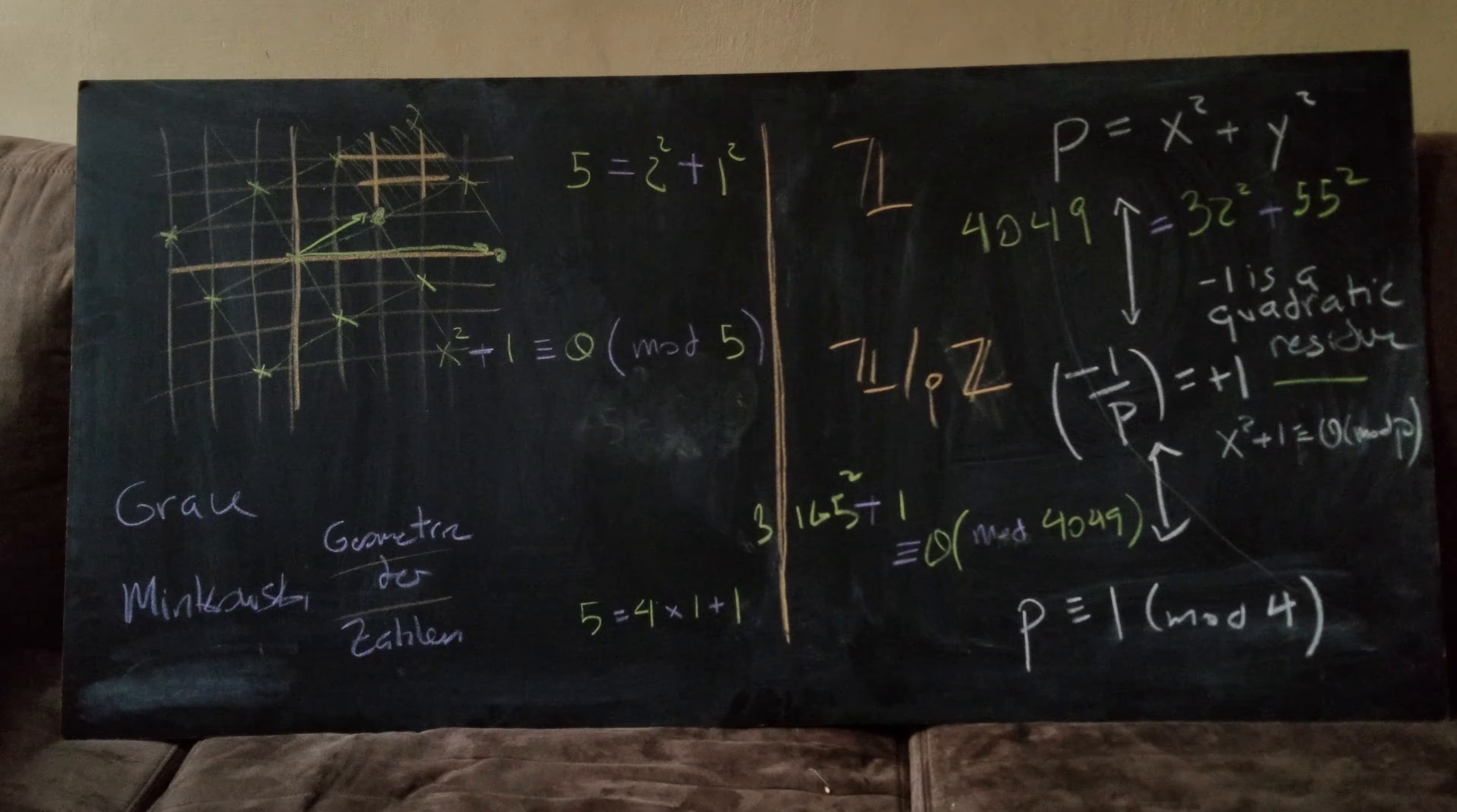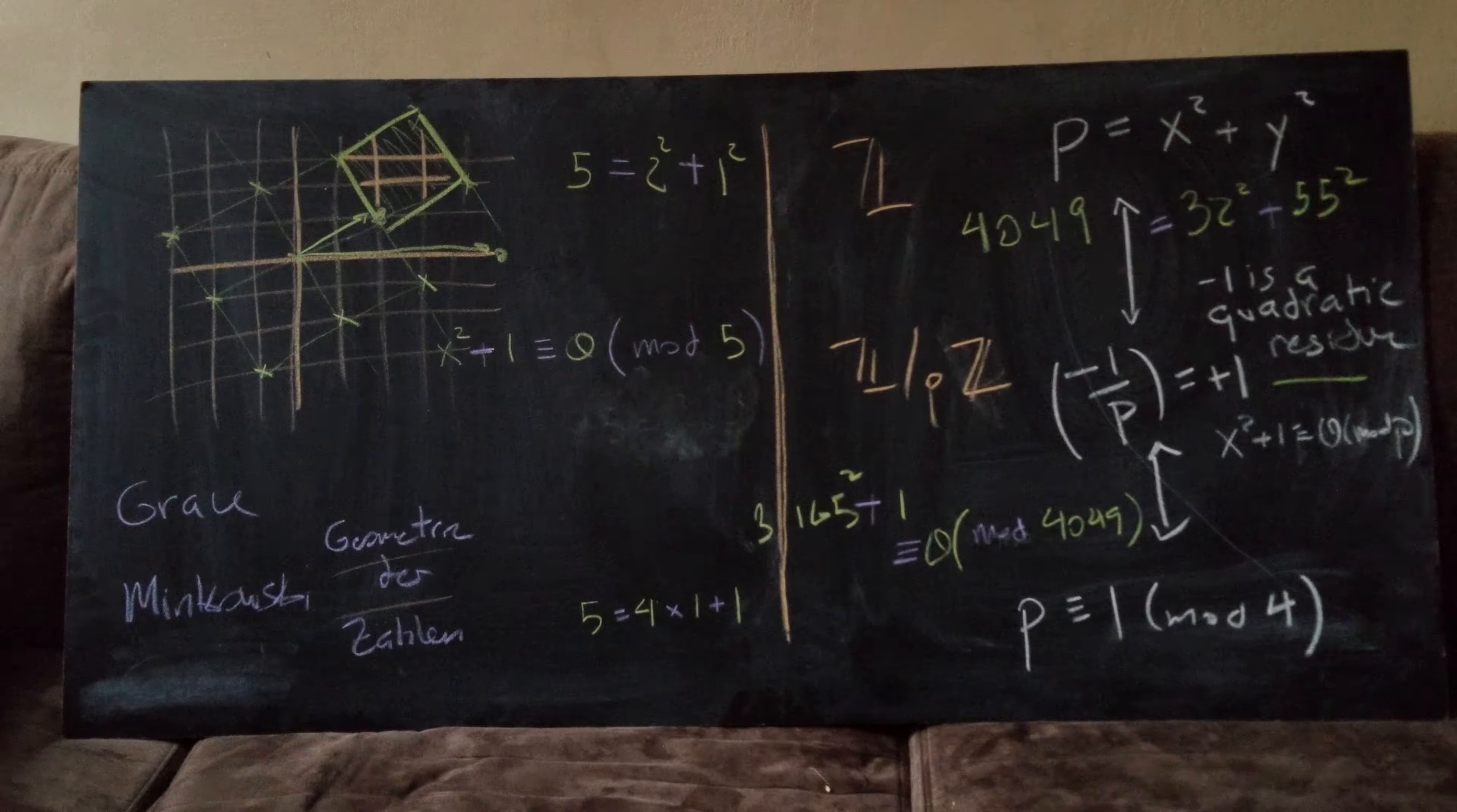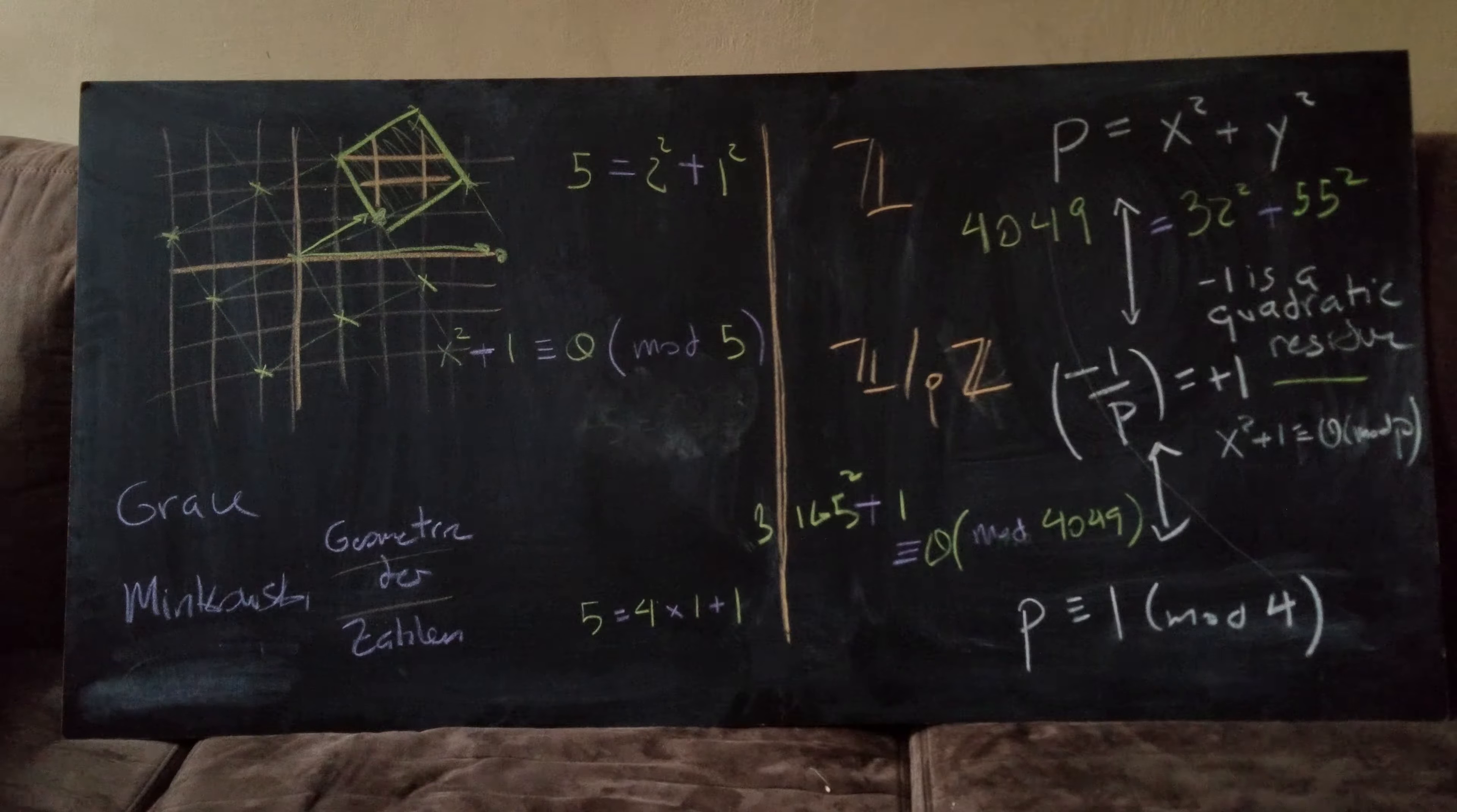So if we complete the lattice spanned by these two numbers we actually get something tiled by squares. And we can show that this square is small enough to contain a vector of size five. I should have started with a bigger number.